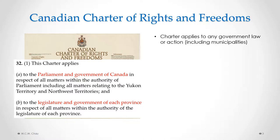So the Charter applies only to anything a government does in Canada, including the federal government, the provincial government, and also municipalities. Municipalities are not mentioned in Subsection 32.1, but they are captured within Paragraph B, which captures provincial governments and all matters within the authority of the legislature in each province. Municipalities are created by provincial governments and get their lawmaking powers from provincial governments, which is why they are covered by Paragraph B.